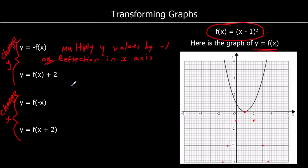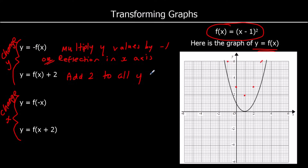For y equals f of x plus 2, we're going to add 2 to all the y values. Whatever we get out of the function, we add 2 to it — so the whole graph shifts up 2 spaces. For f of x plus 2, we add 2 to all the y coordinates. If it was f of x minus 2, it would move down 2. If it was f of x plus 7, it would move up 7 spaces.